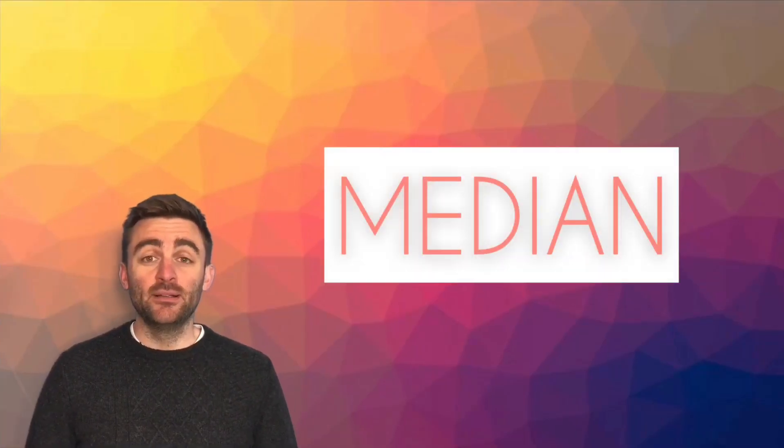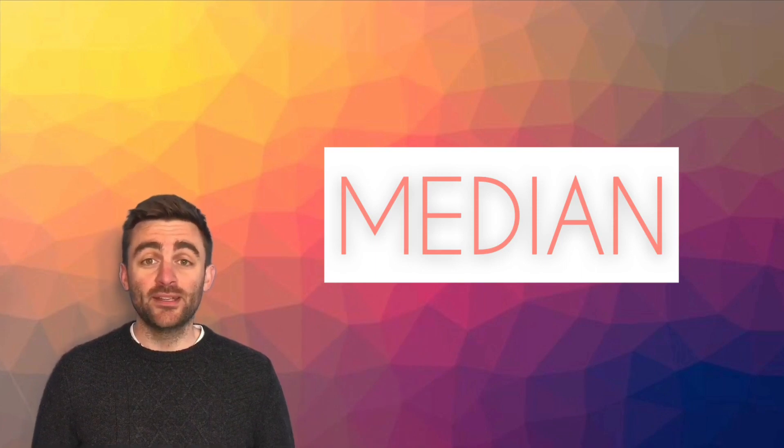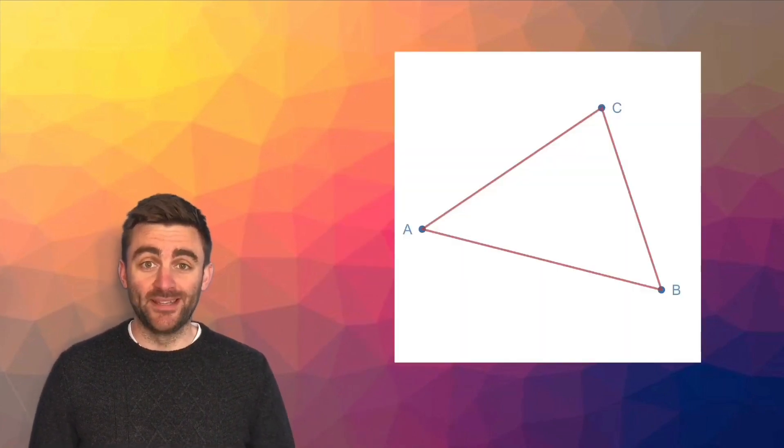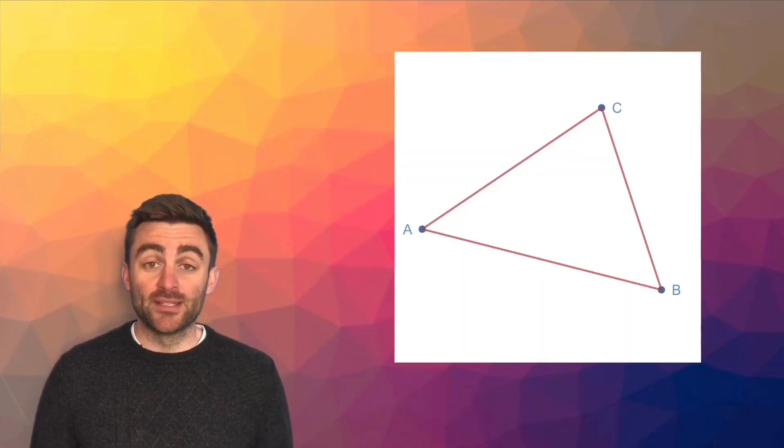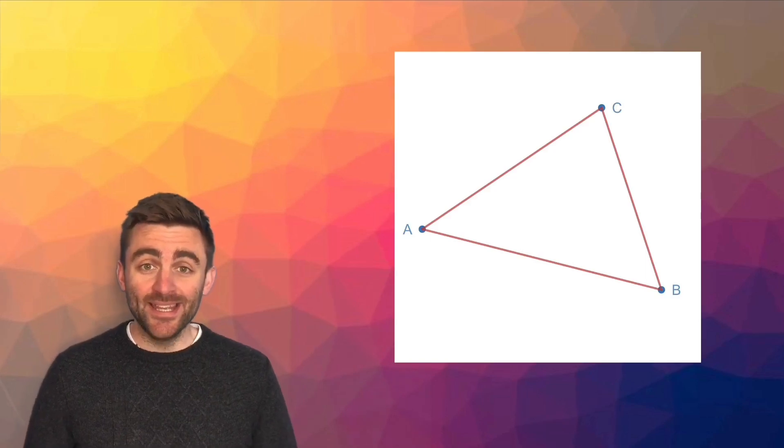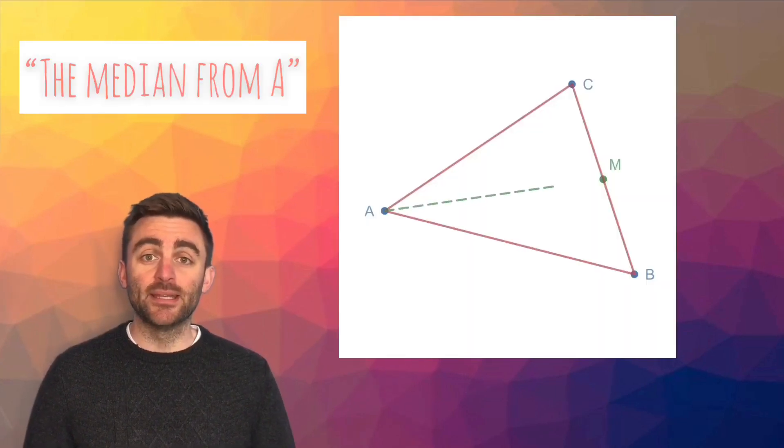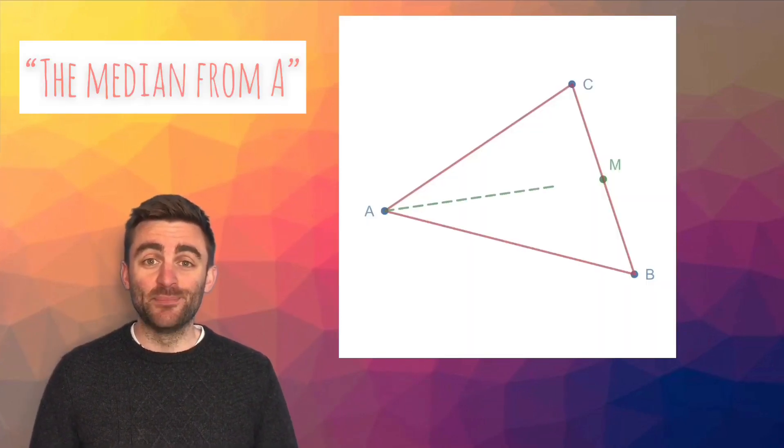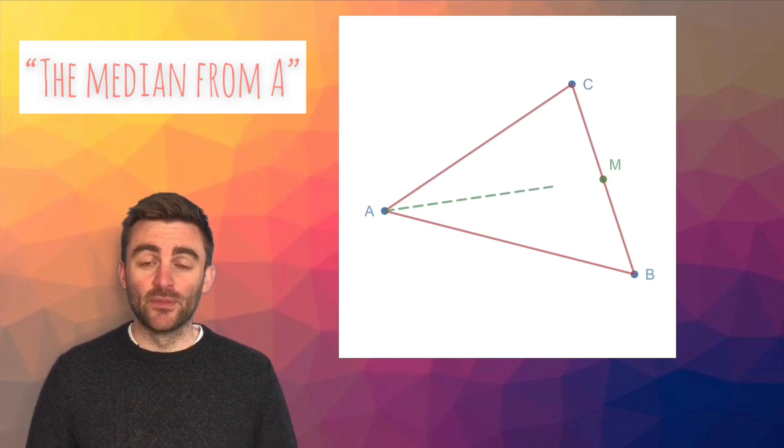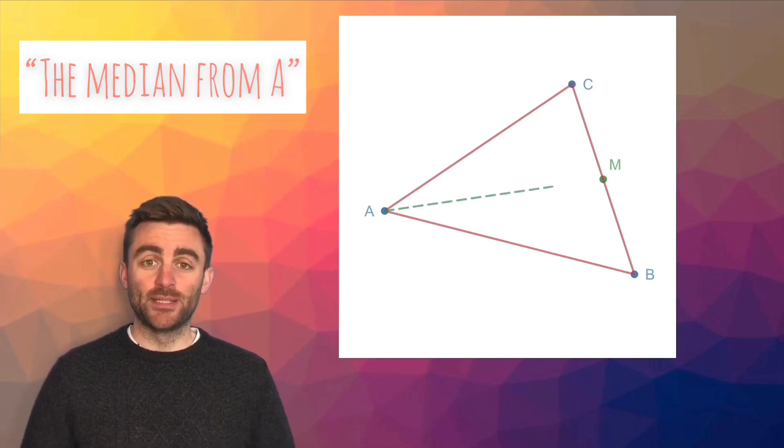A median in a triangle is a line which travels from one vertex to the midpoint of the opposite side. If we consider triangle ABC, then the median from A will travel to the midpoint of the opposite side. In this case, the opposite side from A is BC, so it travels from A to the midpoint of BC.